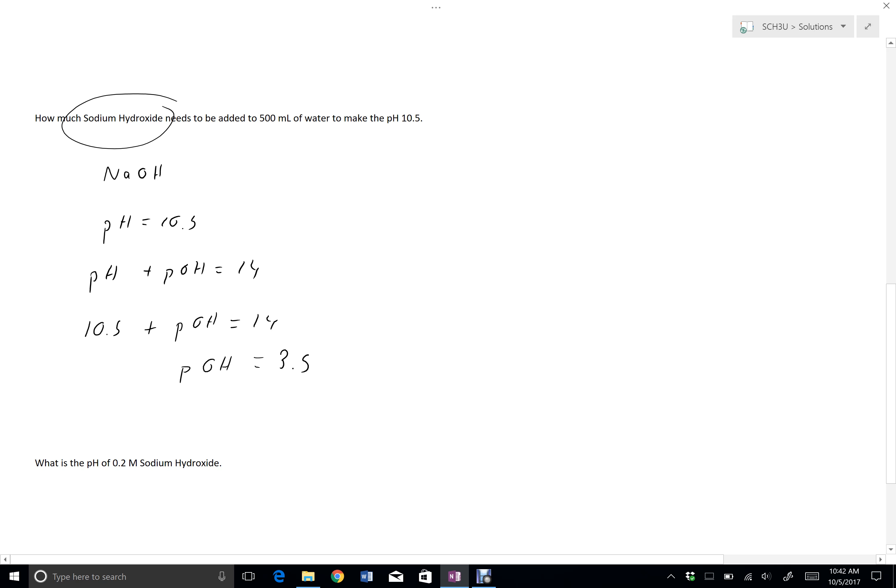With that in hand, I can go ahead and find my concentration of hydroxide. 10 to the negative pOH, so this means 10 to the negative 3.5.